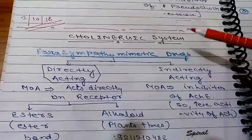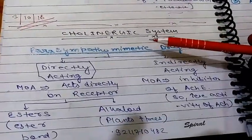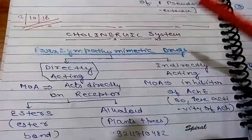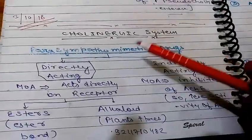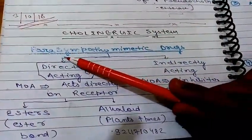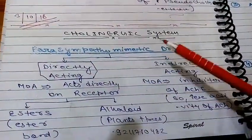In our previous video we discussed the ANS introduction. In this video we are going to discuss the cholinergic system and the drugs, mainly the parasympathomimetic drugs.